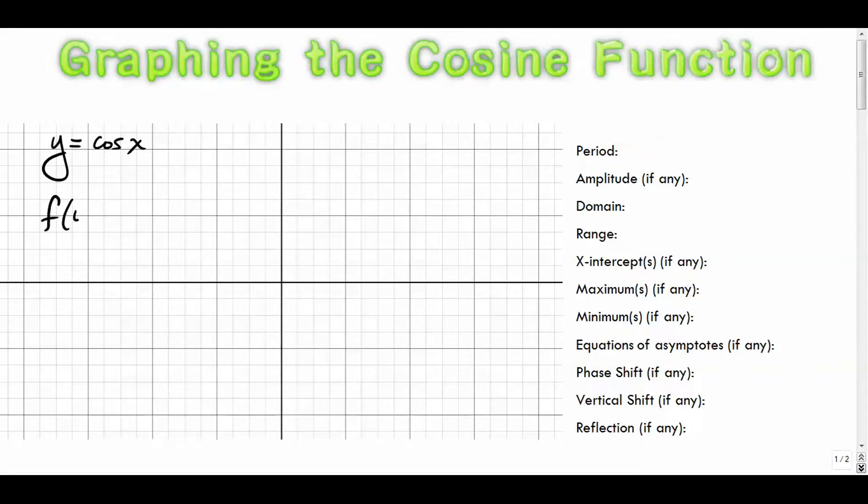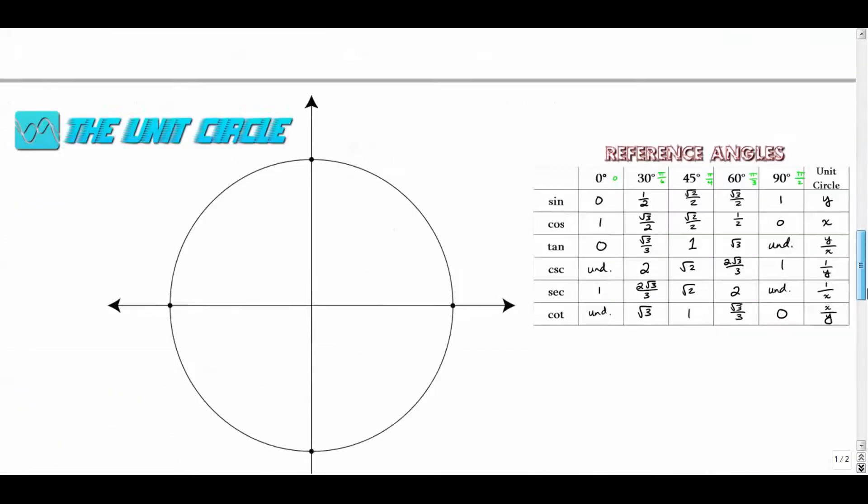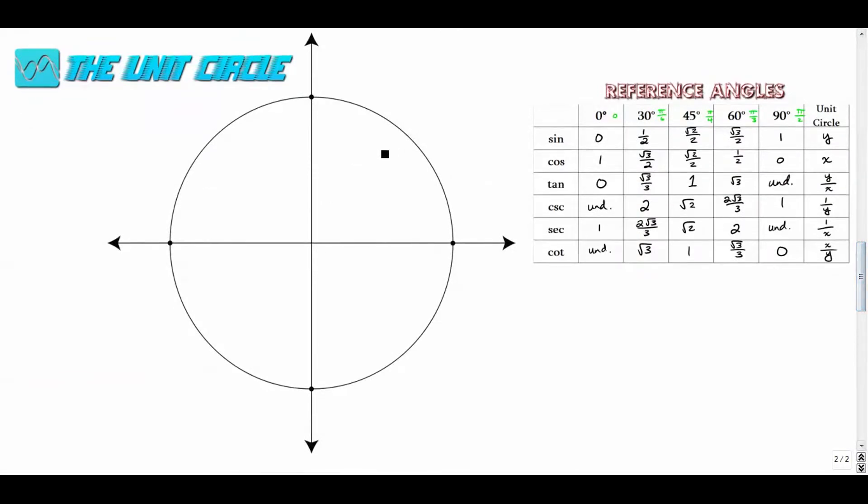So the first point, when x is zero, the cosine of zero is one. When x is zero, y is one. Well, why is that? Well, it comes back to this idea of the unit circle, which we continue to revisit.